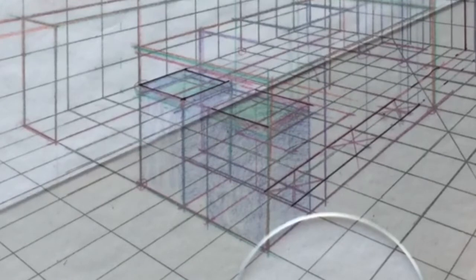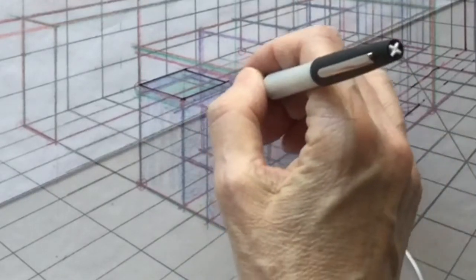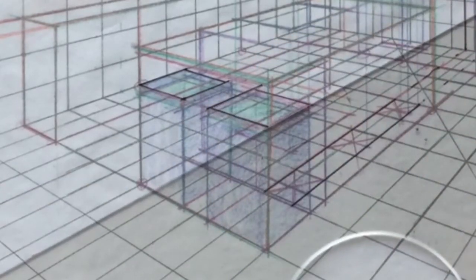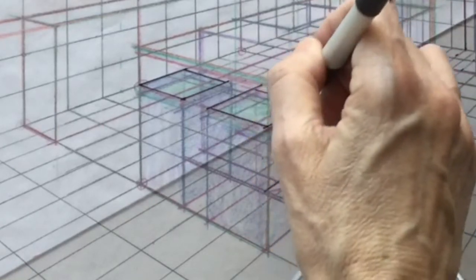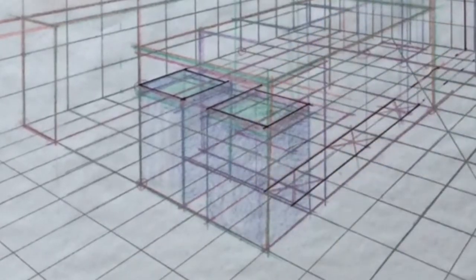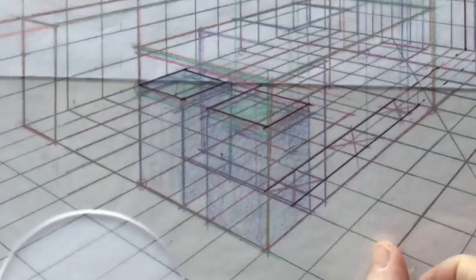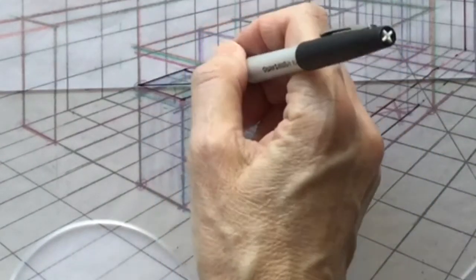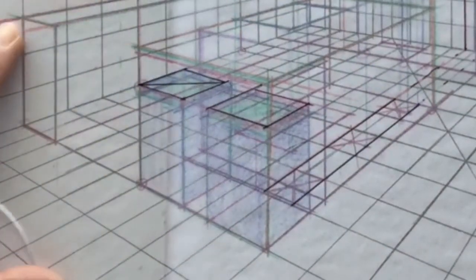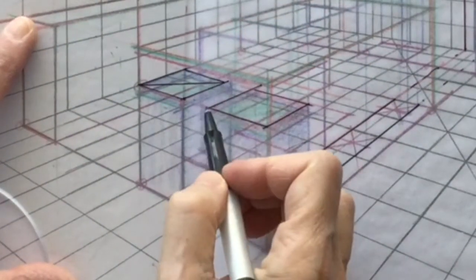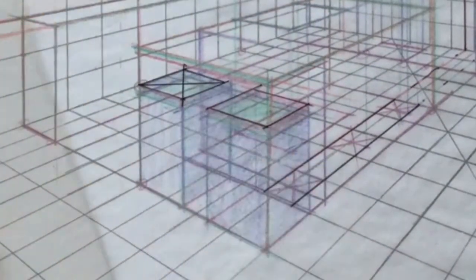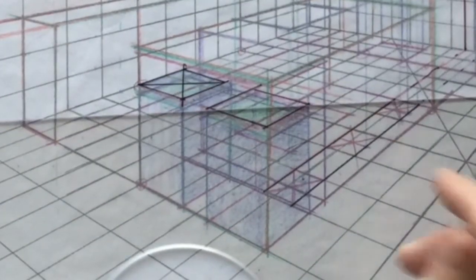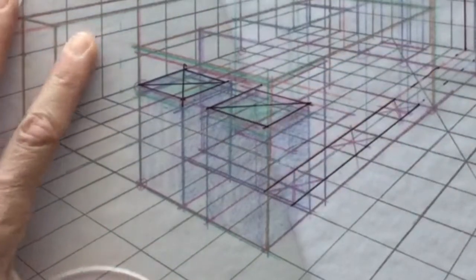And of course, it's always important to know where the center of any box in perspective is. And that's what we'll be doing here when we make an X from corner to corner. That's the top of the cushion that we added. And I hope everyone's being a little more careful than I'm being.